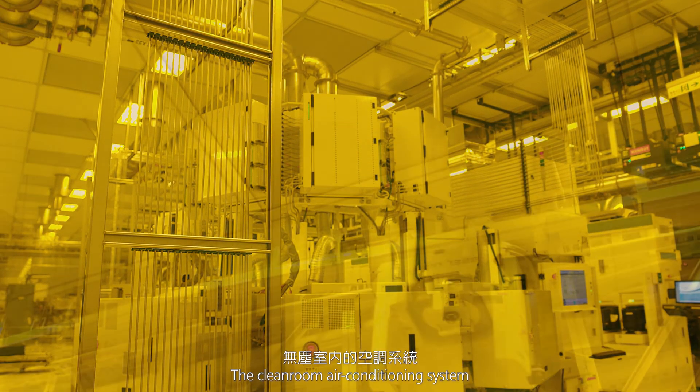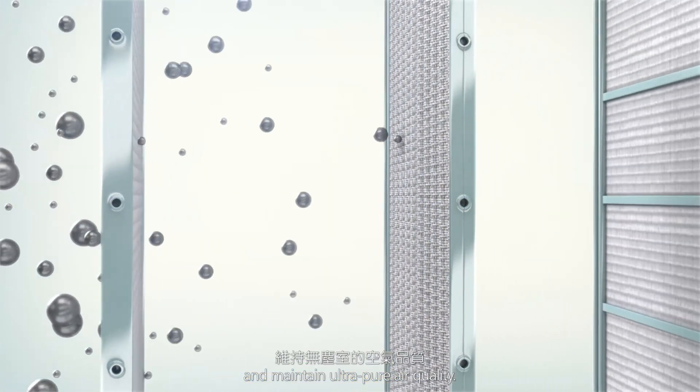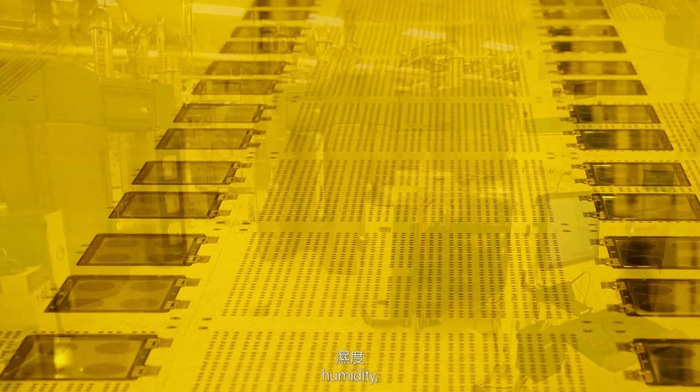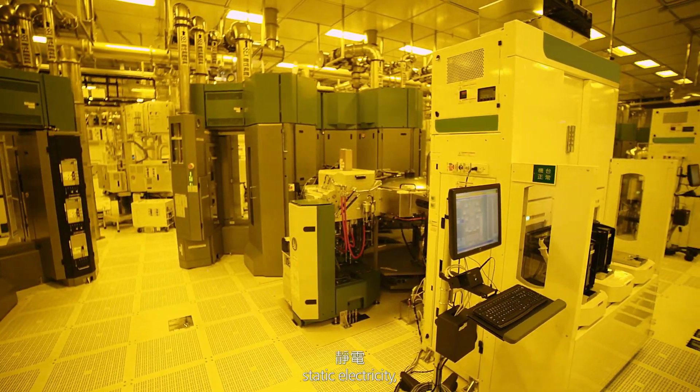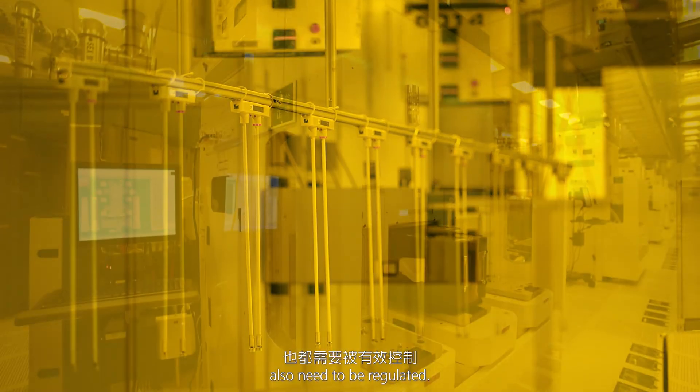The cleanroom air conditioning system uses various filters to trap particles and maintain ultra-pure air quality. Temperature, humidity, static electricity, pressure, magnetic fields, and vibrations also need to be regulated.